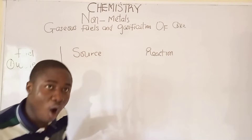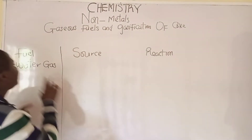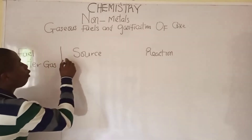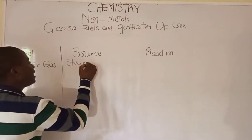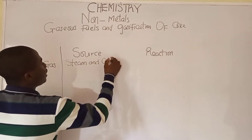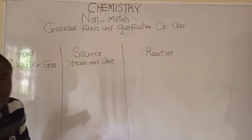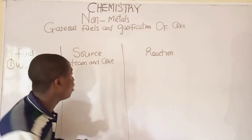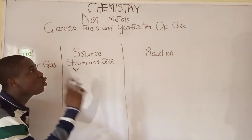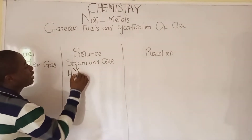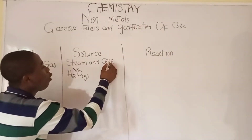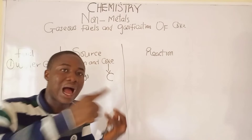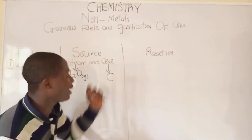How is water gas obtained? Water gas is made up of steam and coke. Steam is gaseous water — that is, water in its gaseous state. Coke is basically carbon, because one of the allotropes of amorphous carbon is called coke.